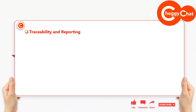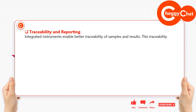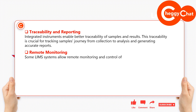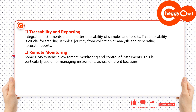Traceability and Reporting: Integrated instruments enable better traceability of samples and results. This traceability is crucial for tracking samples' journey from collection to analysis and generating accurate reports. Remote Monitoring: Some LIMS systems allow remote monitoring and control of instruments, which is particularly useful for managing instruments across different locations or during non-standard working hours.